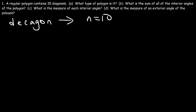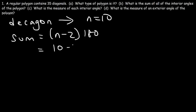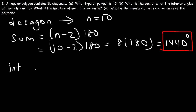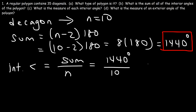Part B: what is the sum of all interior angles? The formula is n minus 2 times 180. With n equal to 10, that's 10 minus 2 times 180, which is 8 times 180, equaling 1440 degrees. That's the sum of all interior angles in the decagon. For Part C, the measure of each interior angle is the sum divided by the number of sides: 1440 divided by 10 equals 144 degrees per interior angle.